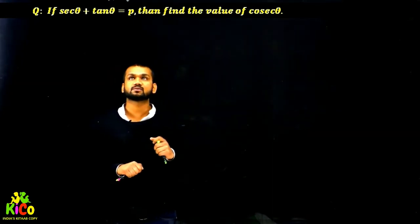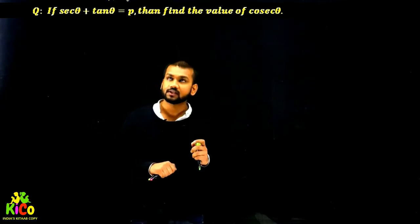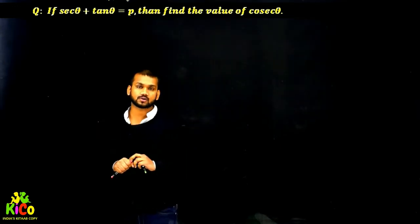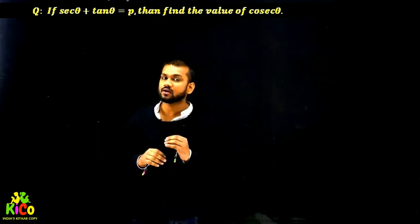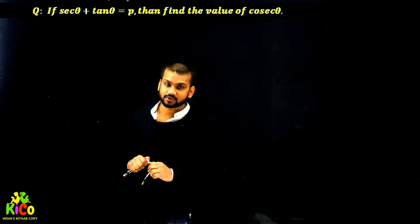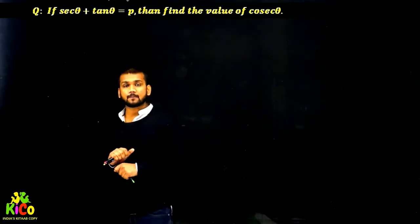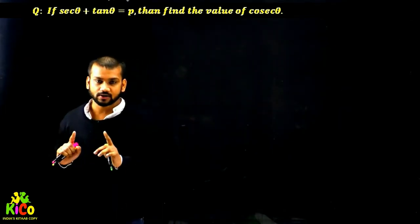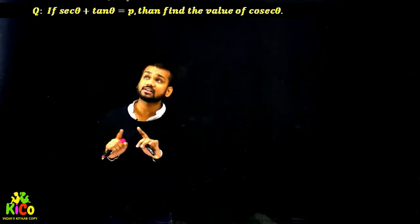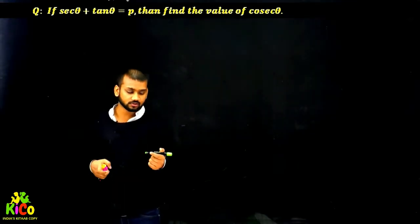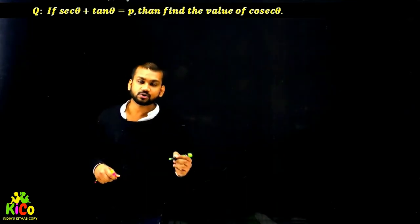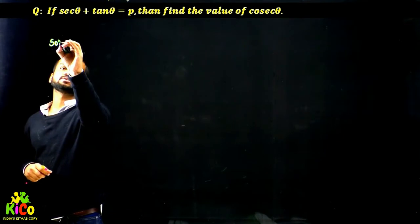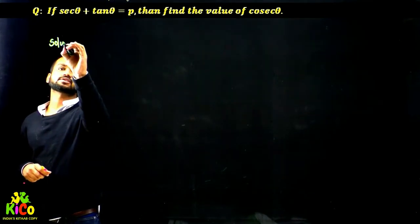If sec θ plus tan θ is equals to P, then find the value of cosec θ. So this is your question. You have to find the cosec θ value when you are given that tan θ plus sec θ is equals to P. Let us start with the solution — we will look at how to deal with this particular question.